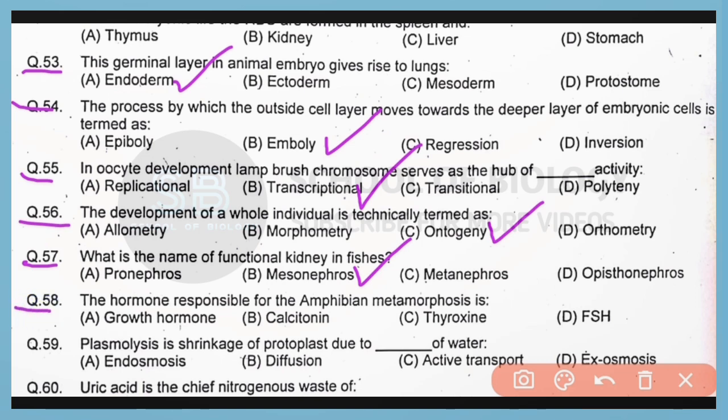Question number 58. The hormone responsible for the amphibian metamorphosis is thyroxin. So correct answer is option C.